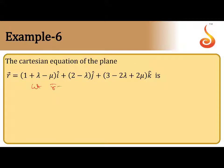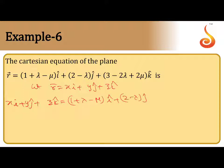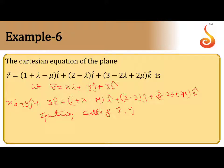Let r̄ = xi + yj + zk. Substituting, we get xi + yj + zk = (1 + λ - μ)i + (2 - λ)j + (3 - 2λ + 2μ)k. Equating the i, j, k coefficients: x = 1 + λ - μ, y = 2 - λ, and z = 3 - 2λ + 2μ.